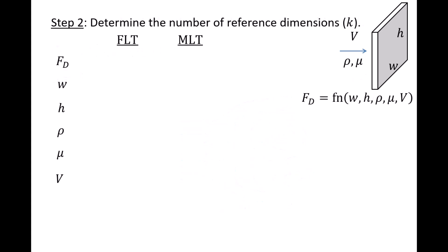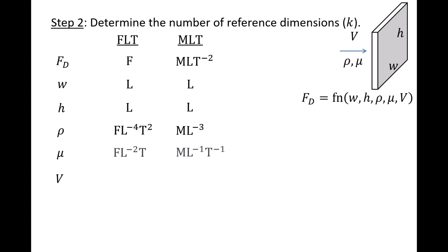We list the basic dimensions of all six variables in the FLT and MLT dimensional systems. The drag force has dimensions of force in the FLT system and dimensions of mass, length, per time squared in the MLT system. The dimensions of W and H are length in both systems. Density has dimensions of force, length to the negative 4, time squared in the FLT system, and mass per length cubed in the MLT system. Absolute viscosity has dimensions of force, length to the negative 2, time in the FLT system, and mass, length to the negative 1, time to the negative 1 in the MLT system. The flow speed V has dimensions of length per time in both systems.